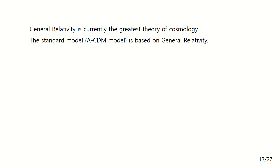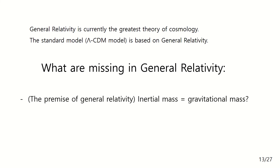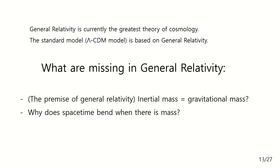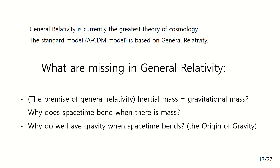We can say General Relativity is currently the greatest theory of cosmology. The standard model, the Lambda-CDM model, is based on General Relativity. But there are four things missing in General Relativity. The most basic premise is that inertial mass and gravitational mass are equal. These two are completely different in concept, and we don't know why they are the same. Second, why does space-time bend when there is mass? Third, why do we have gravity when space-time bends? The last and most fundamental question: what is mass? General Relativity doesn't answer any of these questions.